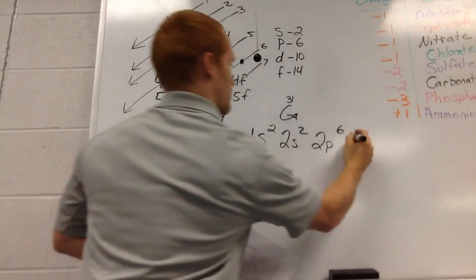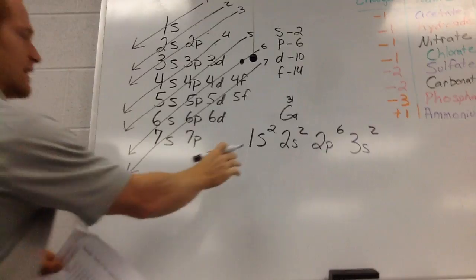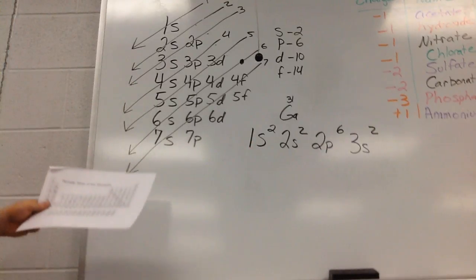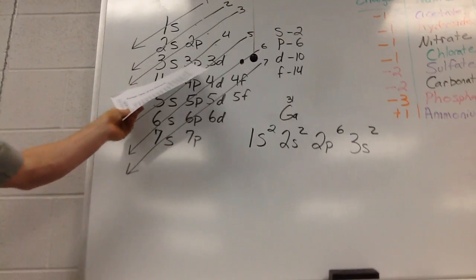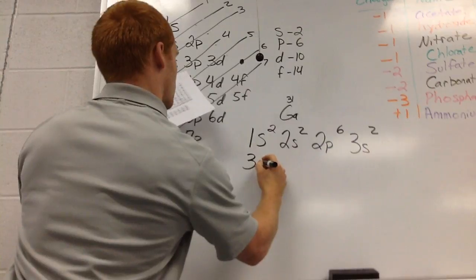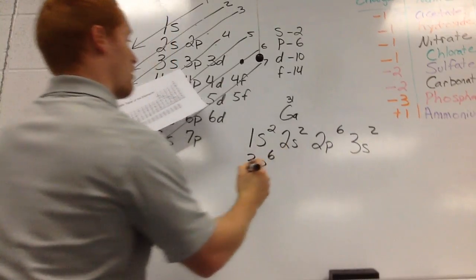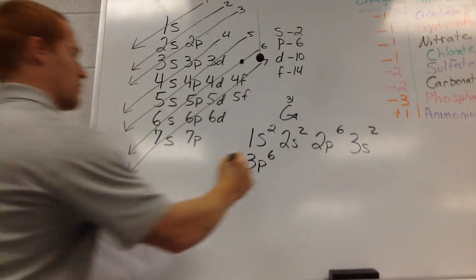Then we're going to go to 3s. We're going to use all two of them. I'm going to move it down just so you can see on the video. After 3s, we're done with our third. Now we're going to go to 3p. We can have 6 in there. And then we're going to go to 4s2.